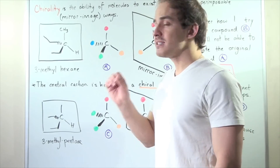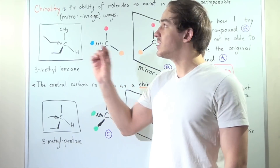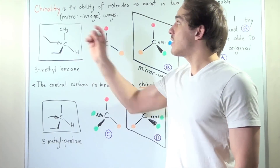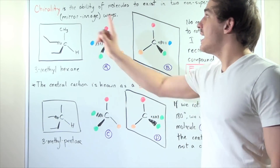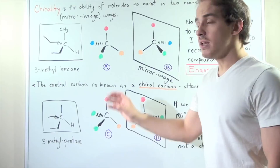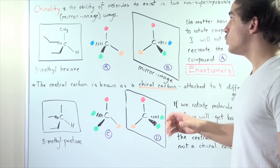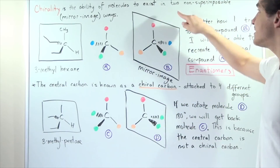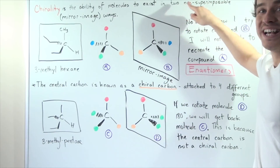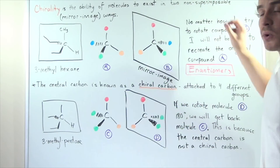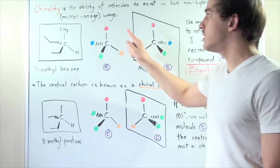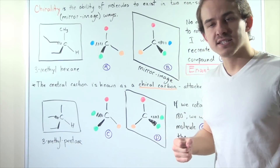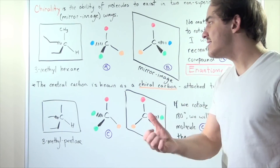So let's define what chirality is. Chirality is the ability of molecules or compounds to exist in two non-superimposable mirror image forms.